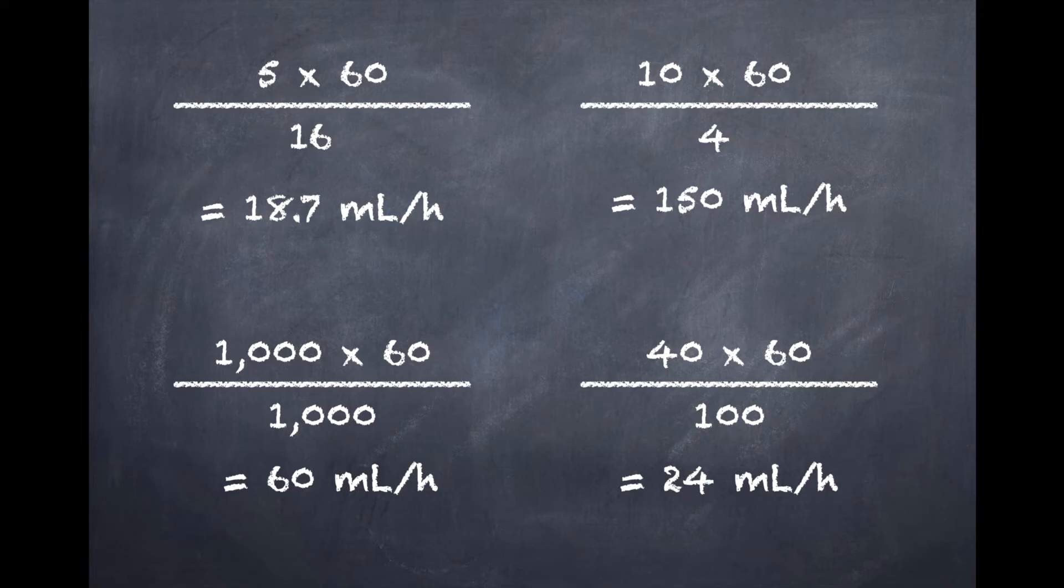I want to draw some attention to the calculation on the bottom left. A thousand times 60 divided by a thousand equals 60 milliliters per hour. It seems kind of silly because if you think about it, this would be one milligram per minute, and the concentration would be one milligram per milliliter.